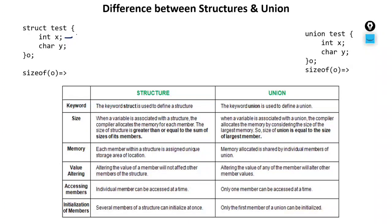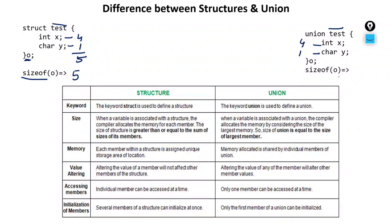I've created the same structure 'test' and the same union 'test', each having variables x (integer) and y (character). Integer takes four bytes, character takes one byte, so the structure total is five bytes. For the union, integer takes four bytes and character takes one byte, so the union size is four bytes — because union takes the size of the largest member. Using the sizeof operator: sizeof applied to the structure variable gives five, but sizeof applied to the union variable gives four.